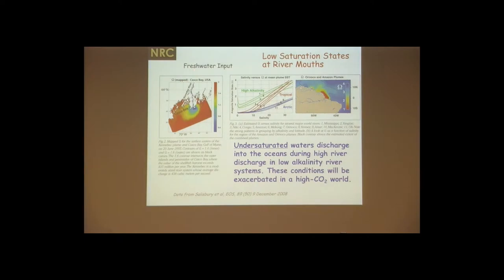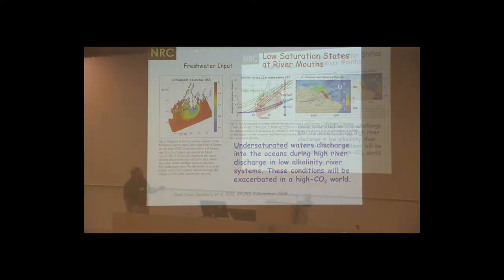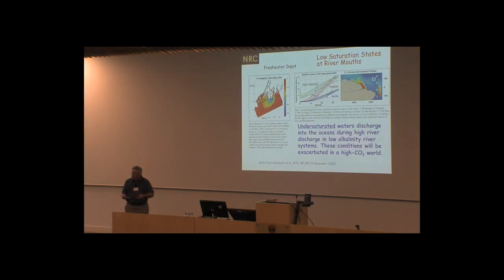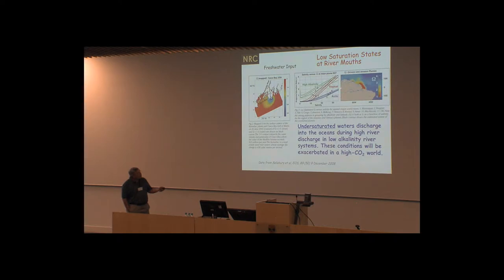River systems have very different alkalinities — some tropical rivers have very low alkalinity, bringing water of low saturation state, while the Mississippi River has very high alkalinity and very high saturation state. We need to know the natural chemistry of each estuarine system and how it affects acidification not only in those river systems but in surrounding embayments. Joe Salisbury has shown clearly that in Maine, for example, low saturation state waters penetrate out into local embayments and can affect ecosystems of clams, oysters, and scallops.